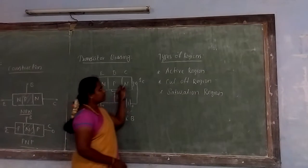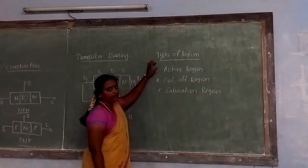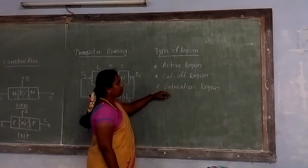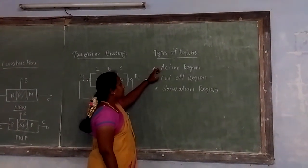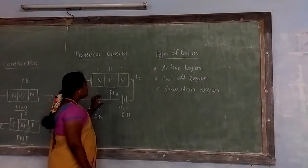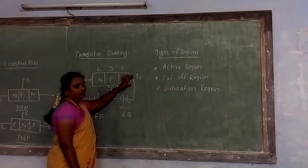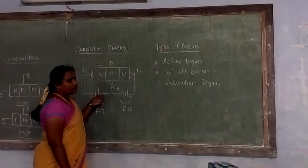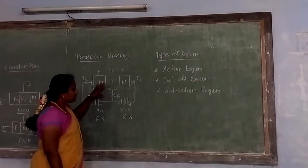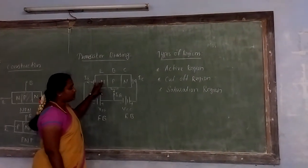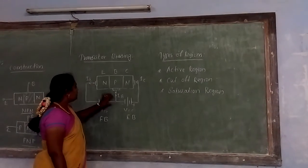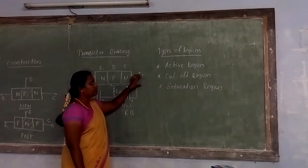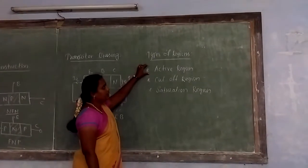Based on these biasing conditions, three types of operating regions are available in transistors: the active region, the cutoff region, and the saturation region. In the active region, the emitter-base junction is forward biased and the collector-base junction is reverse biased, so the transistor works in the active region.